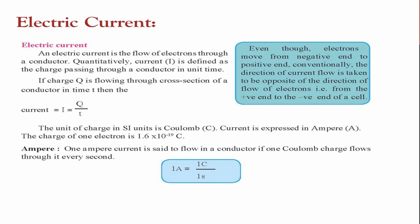The flow of charge in unit time gives current: I = Q/T. Even though electrons move from the negative to the positive terminal, conventionally the direction of current flow is taken as the opposite direction. One ampere equals one coulomb per second — the unit time here is taken in seconds.